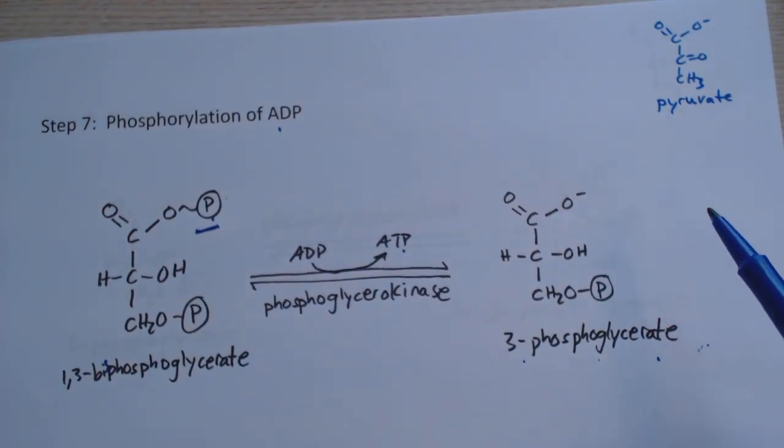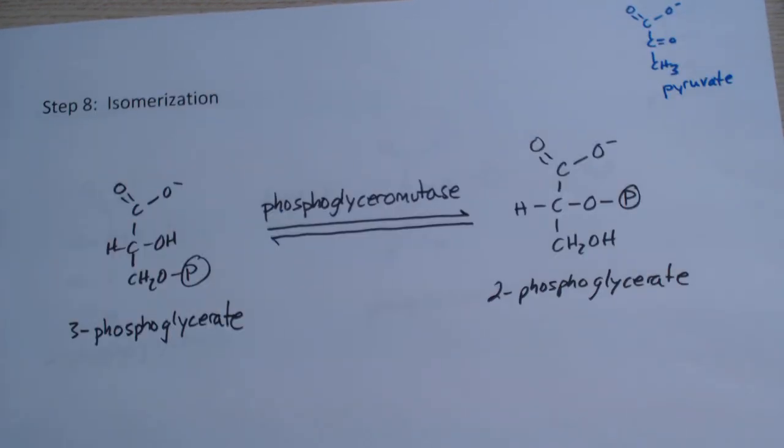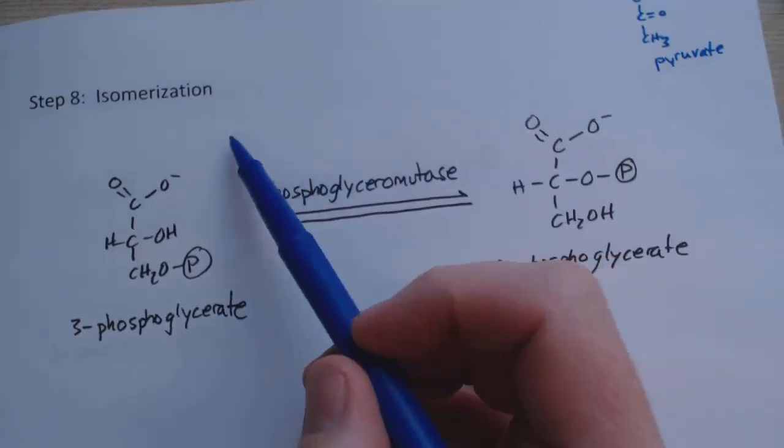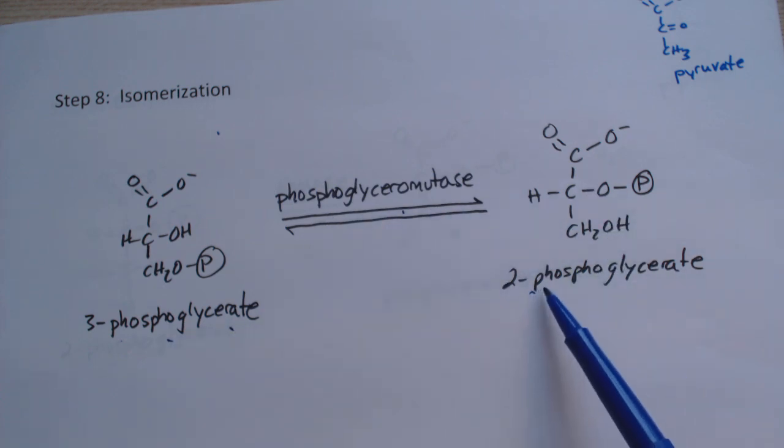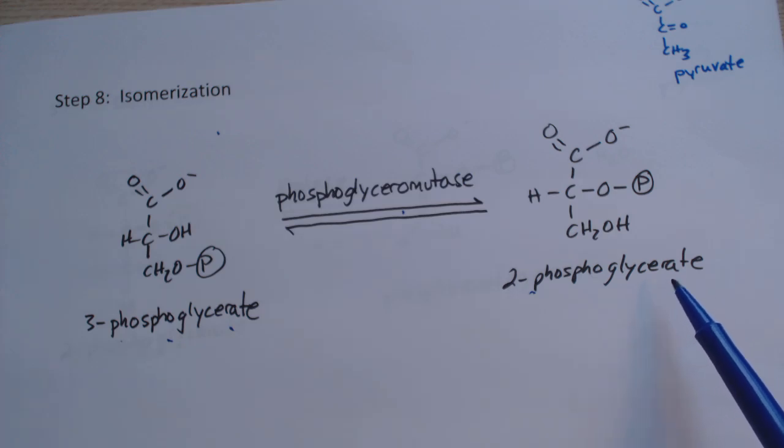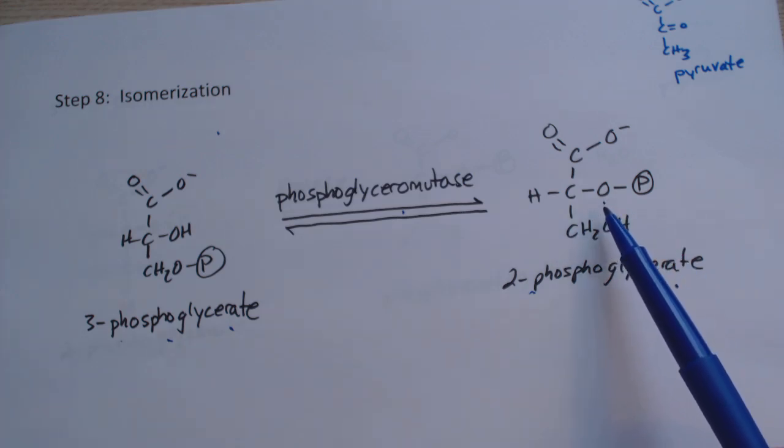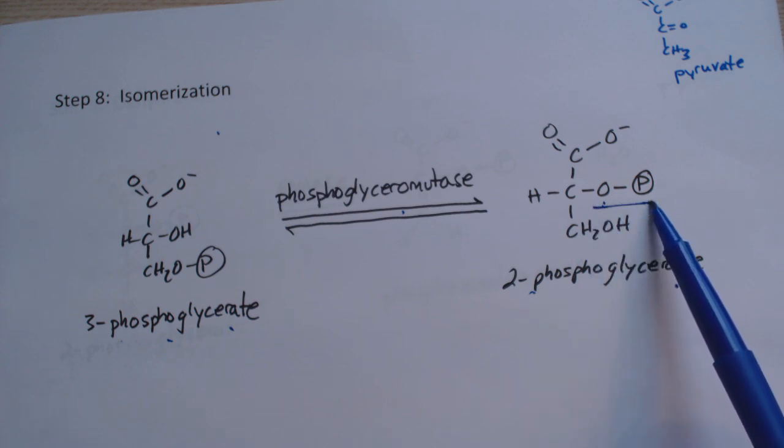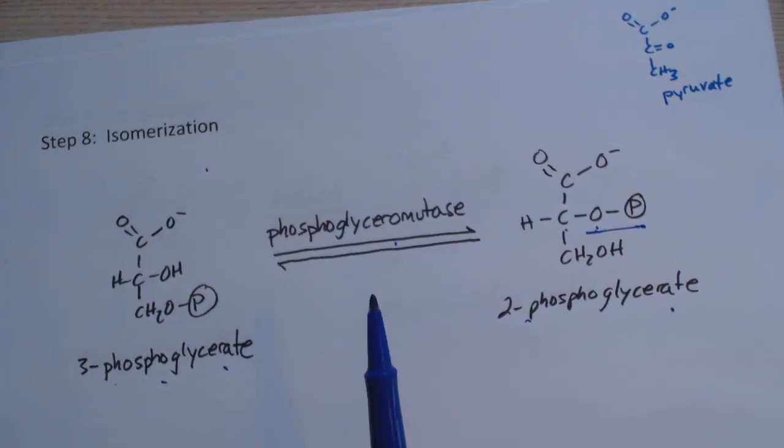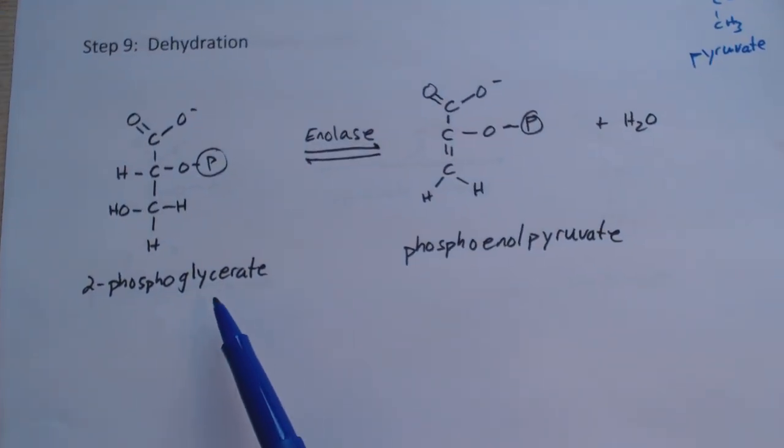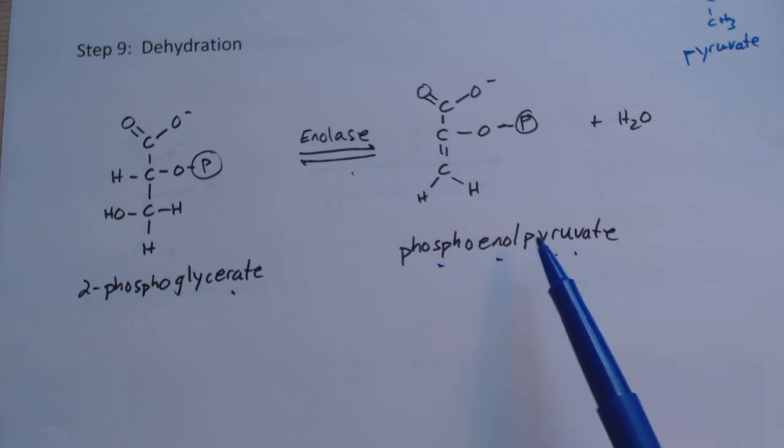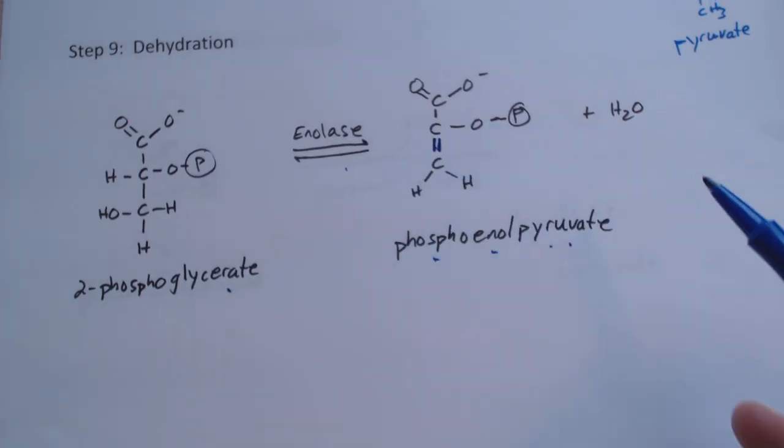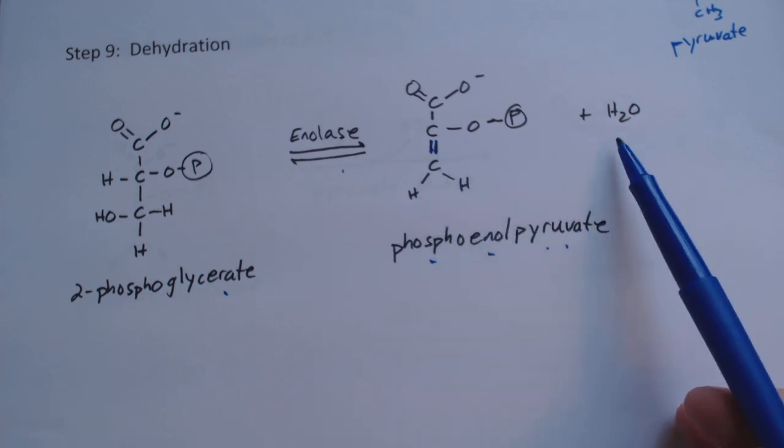Step 8 is isomerization. The 3-phosphoglycerate, through phosphoglyceromutase, becomes 2-phosphoglycerate. We've moved the oxygen and the phosphate to the center carbon. Then in step 9, we have dehydration. The 2-phosphoglycerate, through the use of enolase, produces phosphoenolpyruvate - that 'enol' is the double bond we've created - plus water.